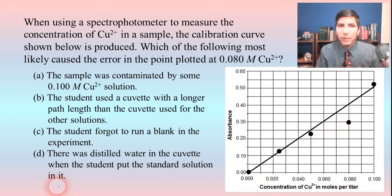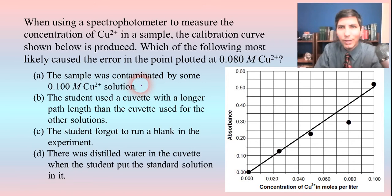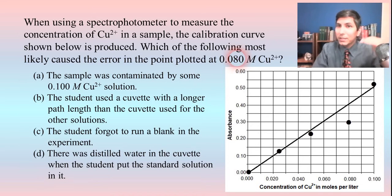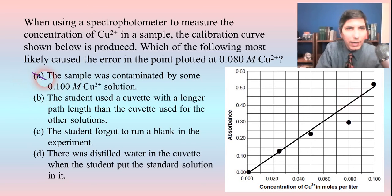Choice A proposes that the sample was contaminated by some 0.1 molar copper two ion solution. That doesn't make sense because if the sample had a little bit of 0.1 molar in it, then what we thought was 0.08 actually had a higher concentration. If it had a higher concentration, then its absorbance should be higher, not lower. So if that were true, the dot would probably be up higher somewhere. Choice A is eliminated.